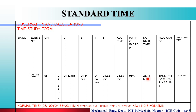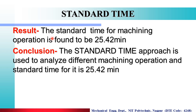The normal time is 23.11 minutes. We then consider an allowance of 10% of normal time. Applying this allowance, the standard time for the machine operation is calculated to be 25.43 minutes.